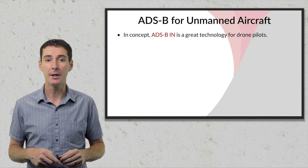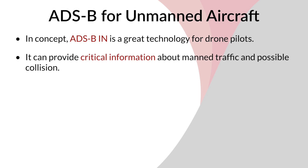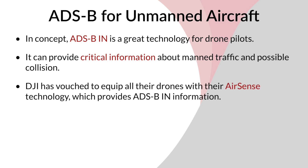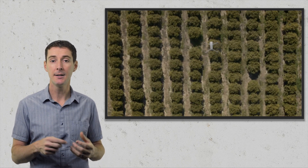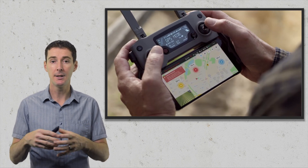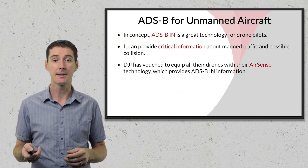For manned aircraft, ADSB In — the ability for unmanned aircraft pilots to receive that information — is a great concept. It provides very critical information we can use to prevent a collision, for example. DJI has actually committed to equipping all of their drones by 2020 with their AirSense technology, which is the equivalent of ADSB In. It will receive information from ADSB towers and broadcast that to drone pilots.